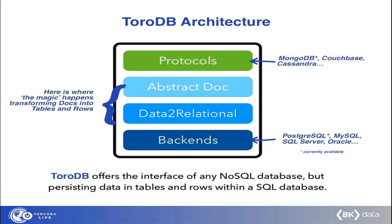TorDB is built on several abstraction layers meant to support multiple other technologies. On the protocol side, it currently speaks the MongoDB protocol but will support other protocols like Couchbase or Cassandra in the future. The same applies to the backend: right now PostgreSQL is the main database, but all major databases will be supported as destinations for the data. Later today, we're going to see another one of those in action.